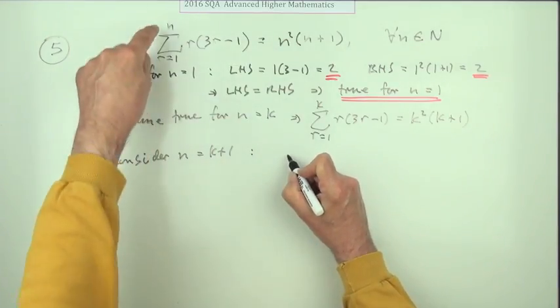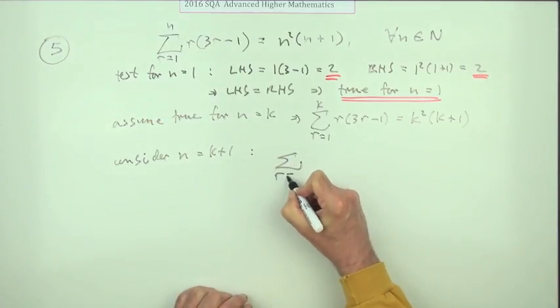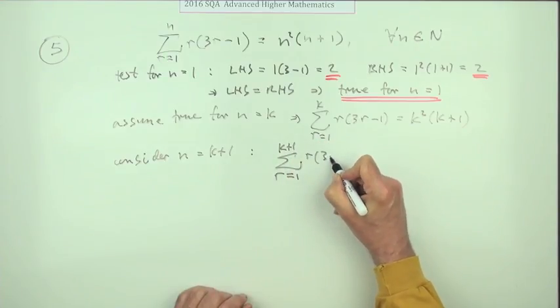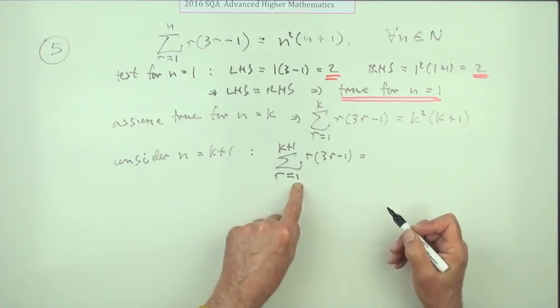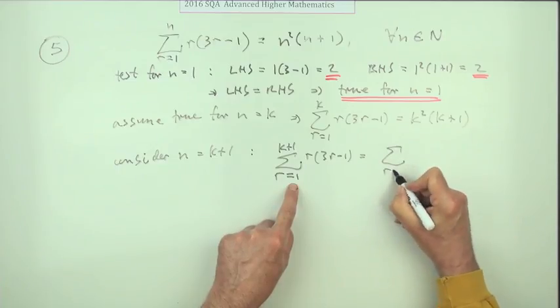So that means you write down this expression with n replaced by k plus 1. Sigma r equals 1 to k plus 1 of r times 3r minus 1 would be, since that just says add up all the terms from r is 1 to k plus 1, that would just be the same as add up all the terms from r is 1 to k.